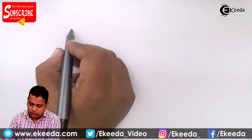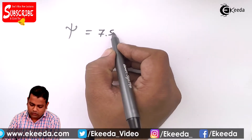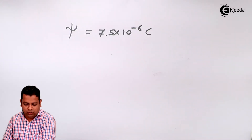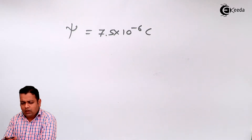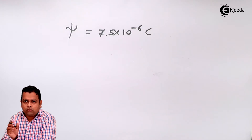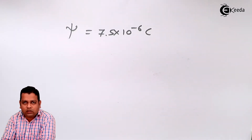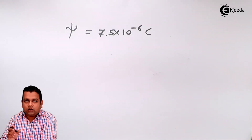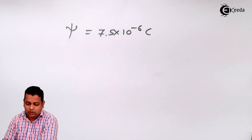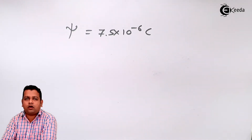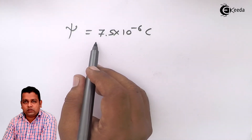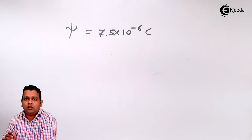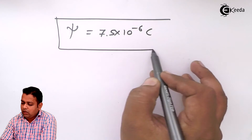Substituting q upon 4 pi, with theta integral from 0 to pi/2 and phi from 0 to pi/2 of sin theta d-theta d-phi. In the next step we get q upon 4 pi times [minus cos theta] from 0 to pi/2, times [phi] from 0 to pi/2. After substituting the value of q, psi equals 7.5 times 10 to the power minus 6 coulombs. Since the surface was one-eighth of the sphere, 60 microcoulombs divided by 8 gives 7.5 microcoulombs. This is the solution for part A.